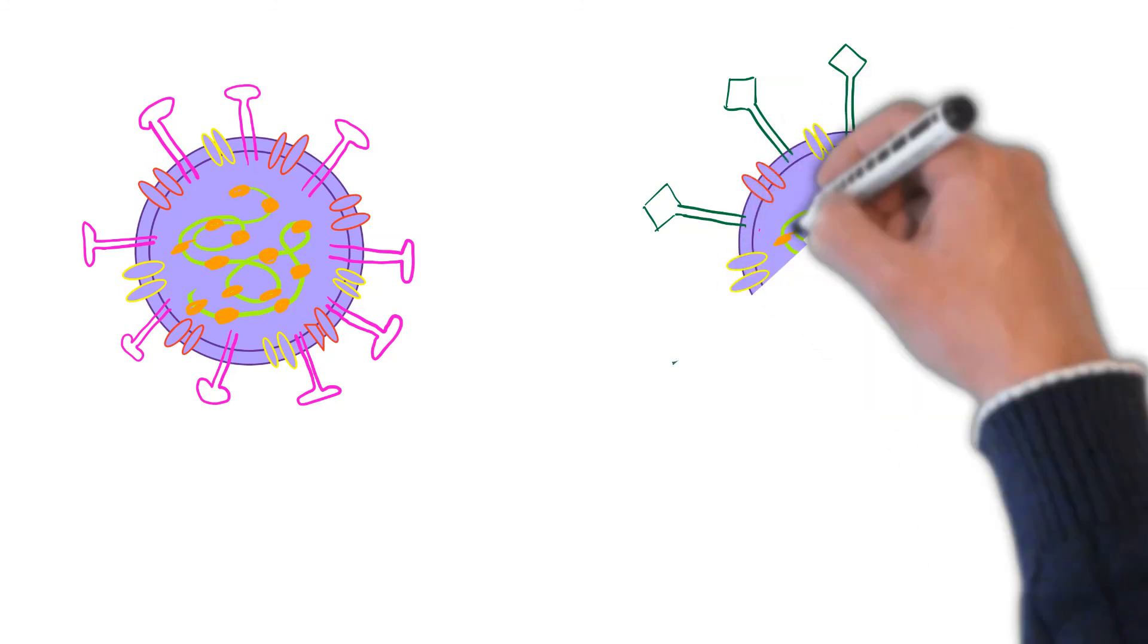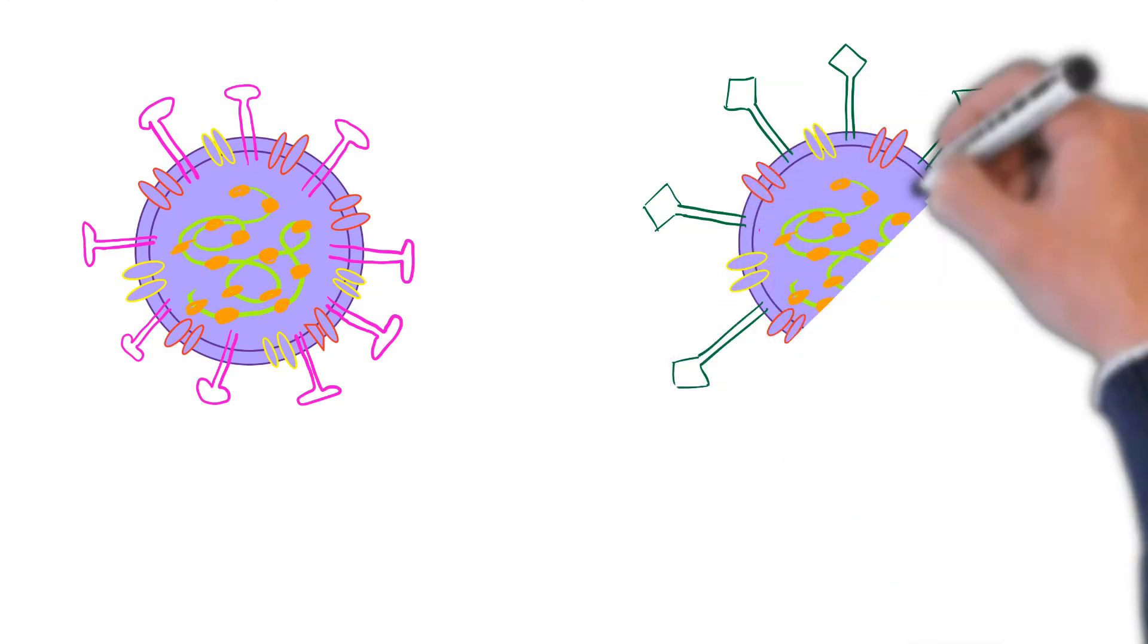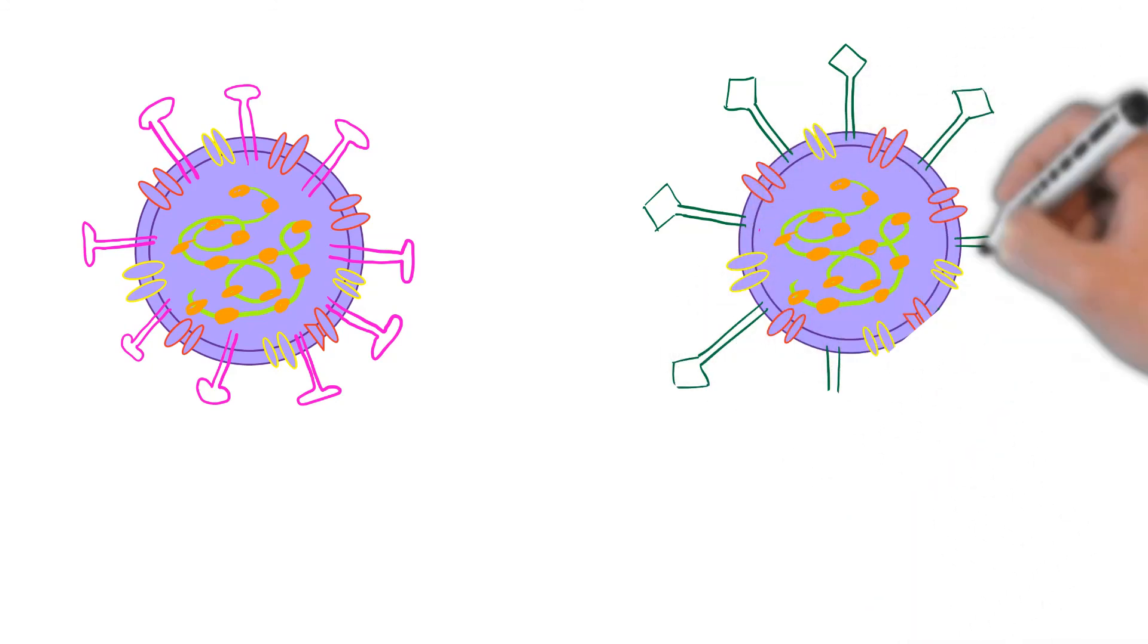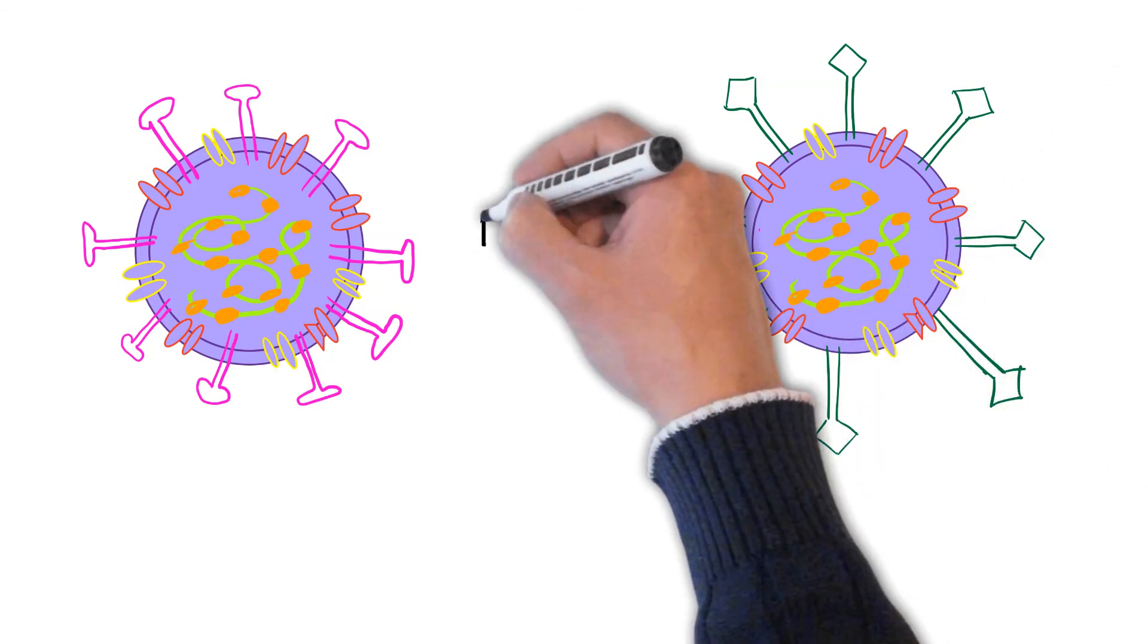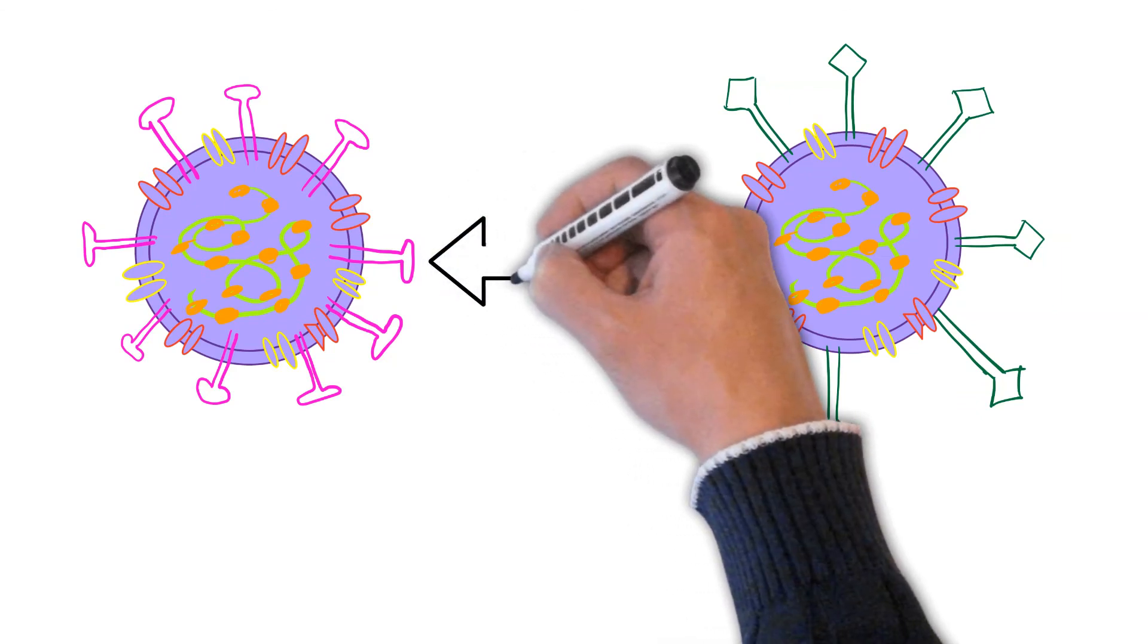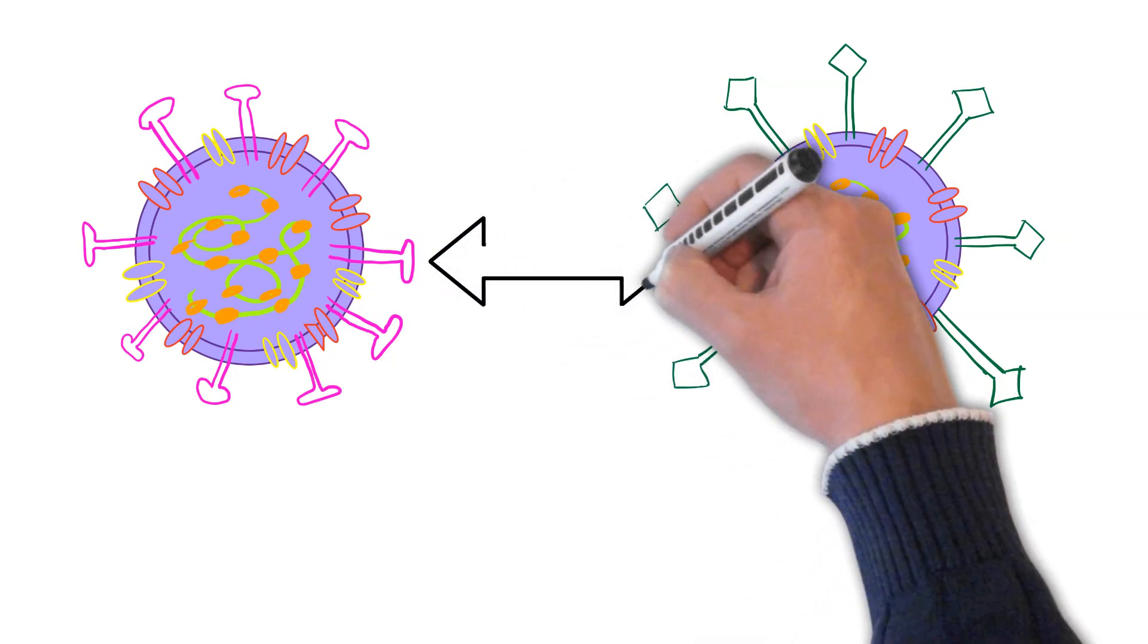If it looks different enough, it's possible that our vaccines that have been developed won't recognize that spike protein anymore. In other words, we've created a spike protein for the wild type, not for the variant.